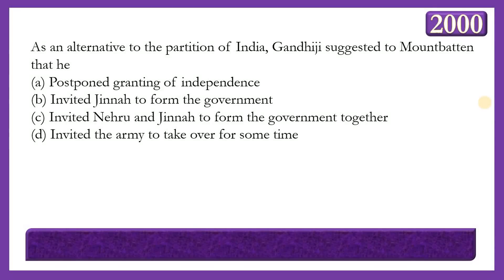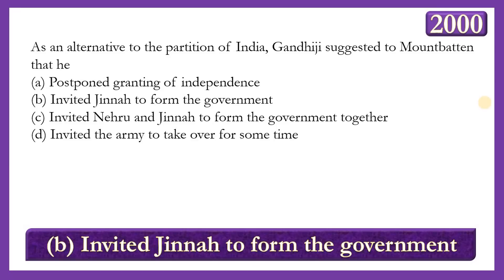Next question: As an alternative to the partition of India, Gandhiji suggested to Mountbatten that he should: postpone granting of independence; invite Jinnah to form the government; invite Nehru and Jinnah to form the government together; or invite the army to take over. The answer is option B — Gandhiji suggested that Mountbatten should invite Muhammad Ali Jinnah to form the government — though this suggestion was bitterly criticized by Congress members.